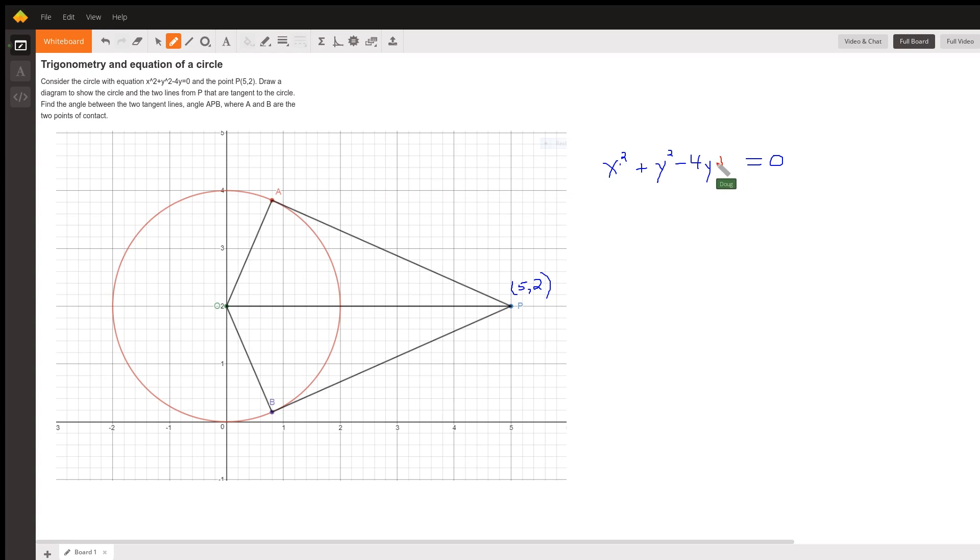To make this a perfect square trinomial, add 4 here—half of negative 4 squared is 4. So in standard form, the equation of this circle is x² + (y - 2)² = 2².